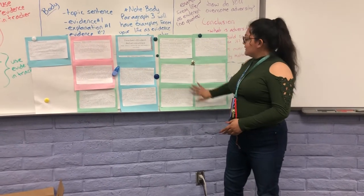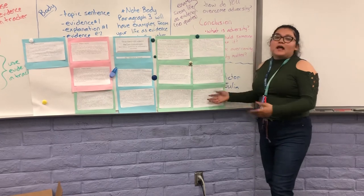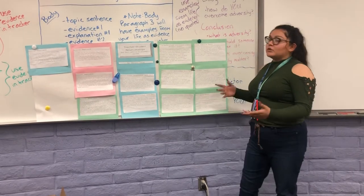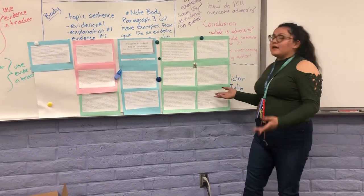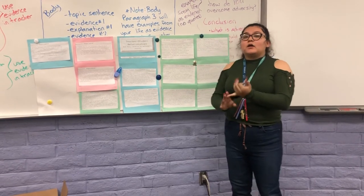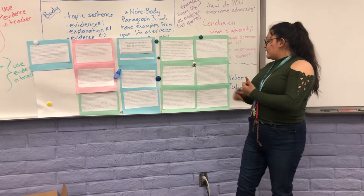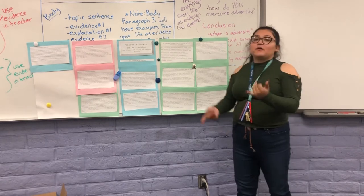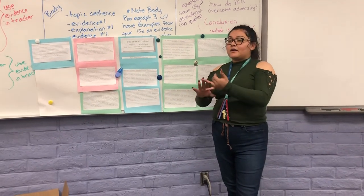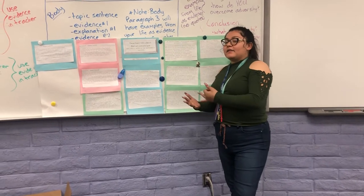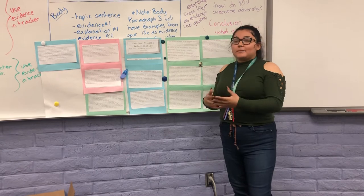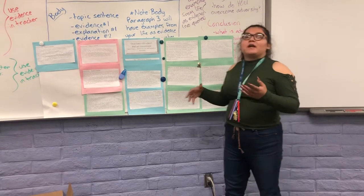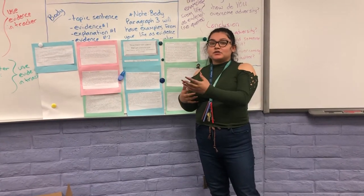My last theory is the self-system theory. It relates to students in general, but my specific examples are for older students. It's the idea that students have three basic needs in order to be successful in a classroom: they want to have competence, autonomy, and relatedness. They want to feel related to the material as well as the person teaching them. They want competence — the idea that they are able to succeed in the material in this environment. And autonomy — they want to have a choice as to whether or not to engage with the material.